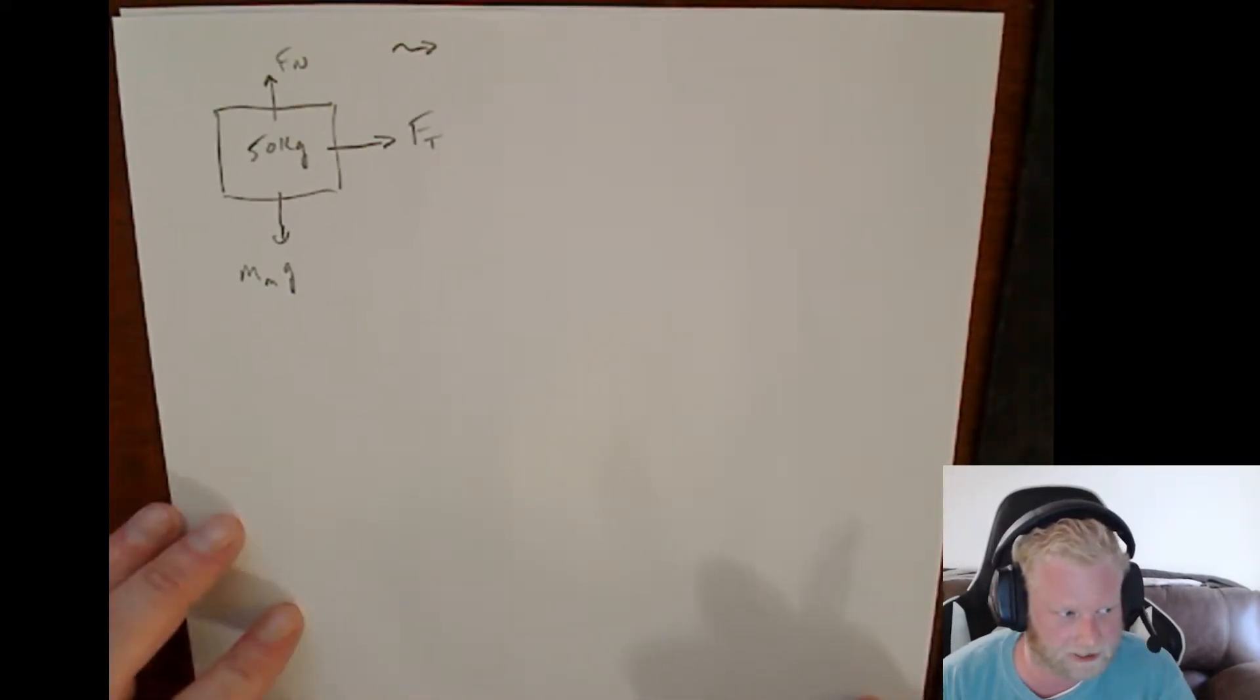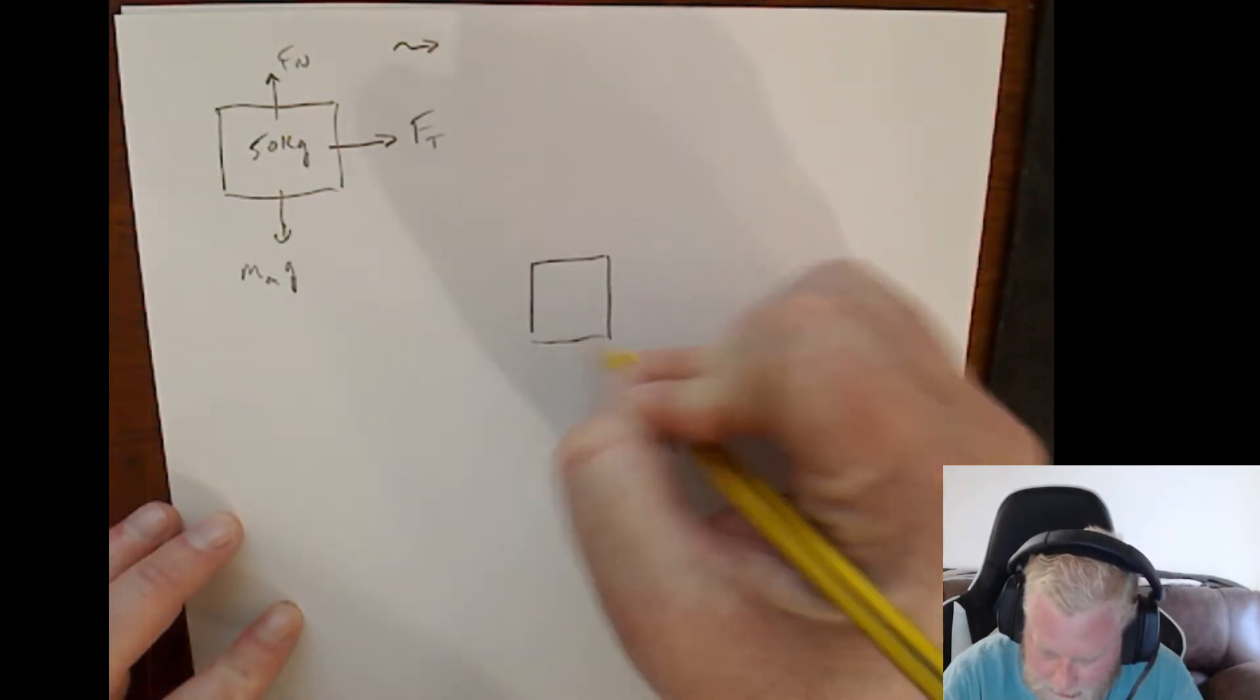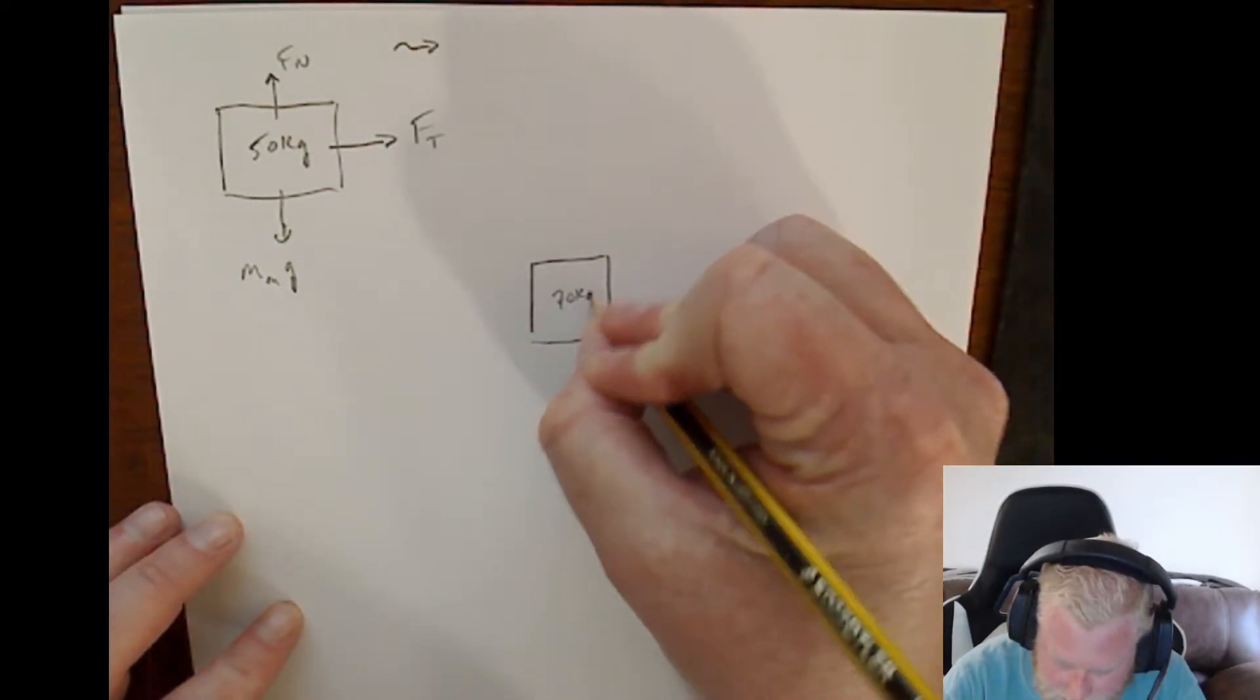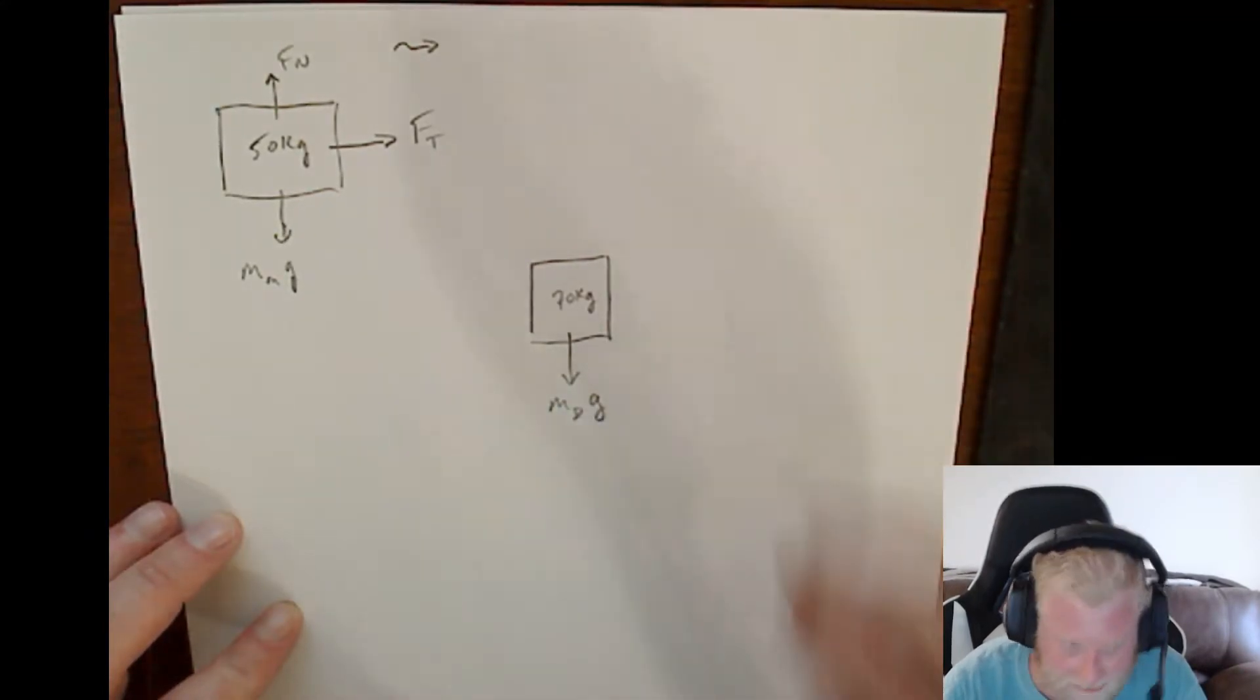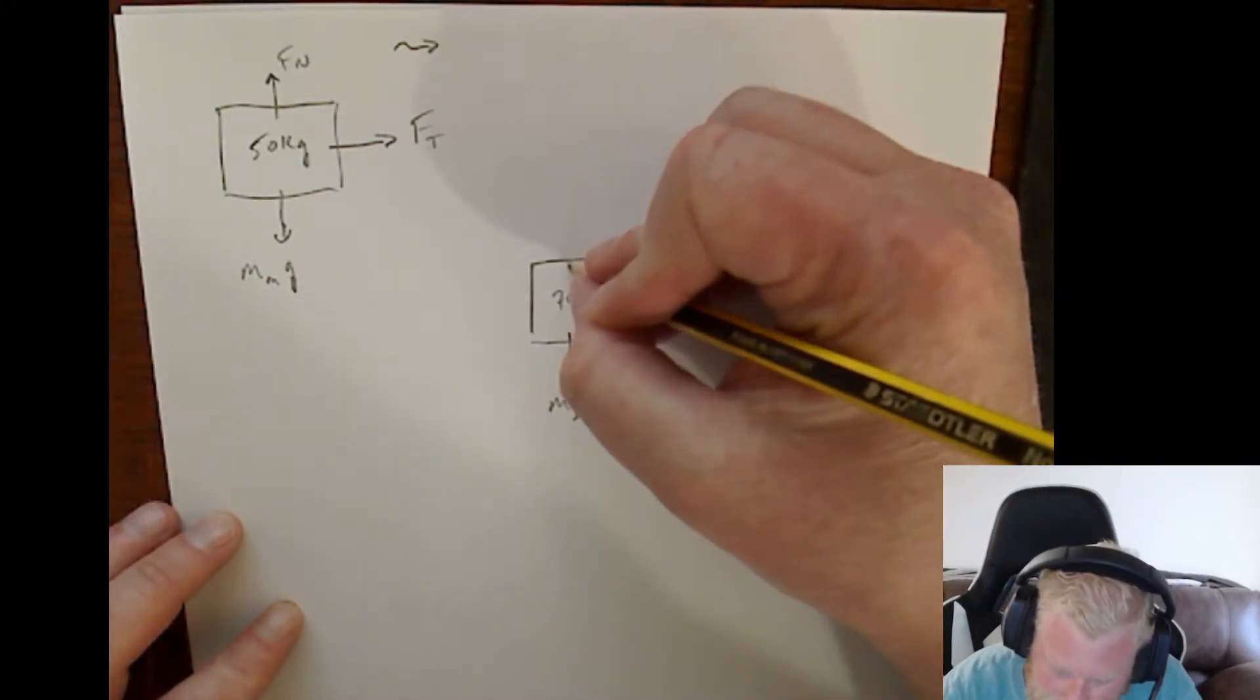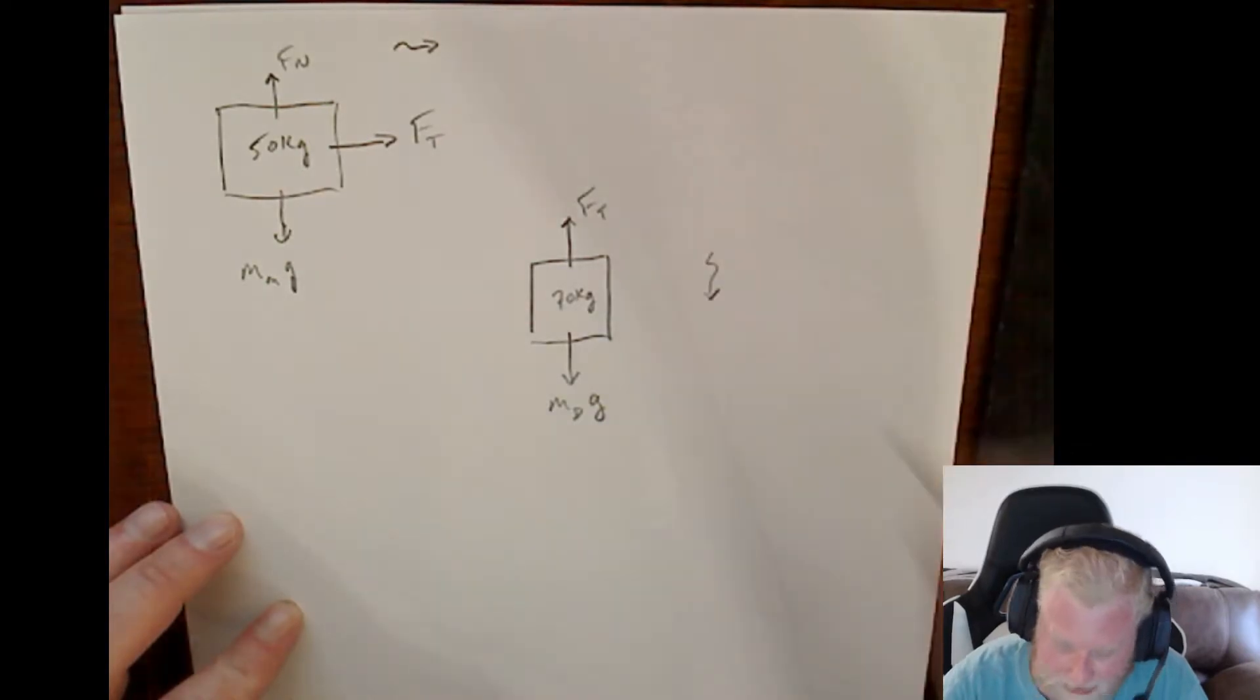Now, Don, on the other hand, mass is at 70 kilograms. He's got weight, so we'll call that mass Don times acceleration due to gravity. And there's a tension force. And we know he's moving downwards.